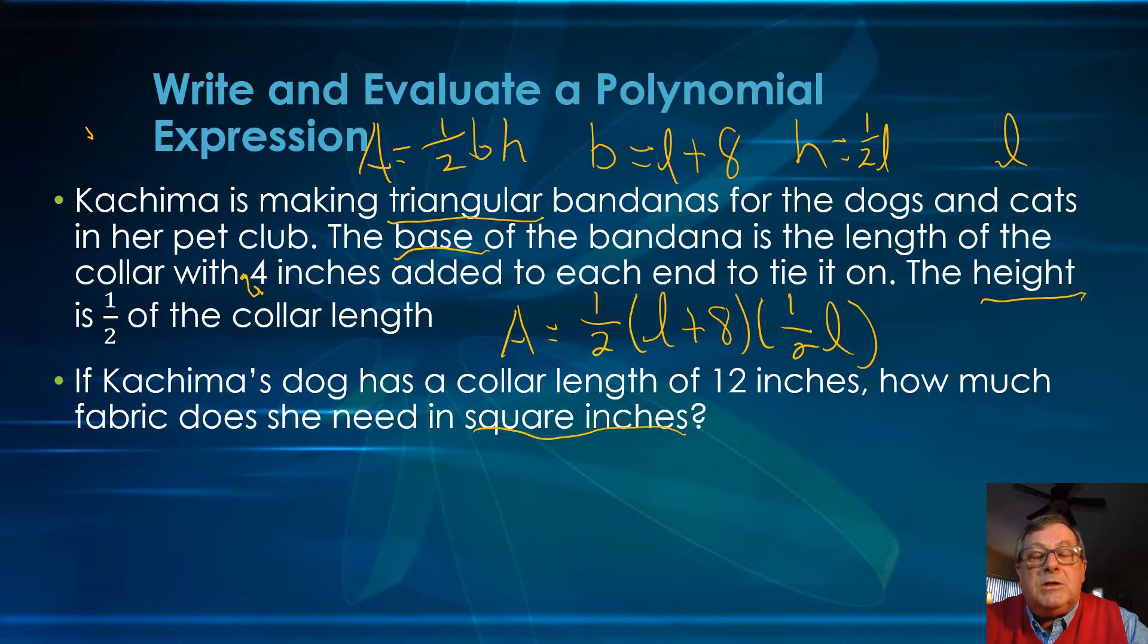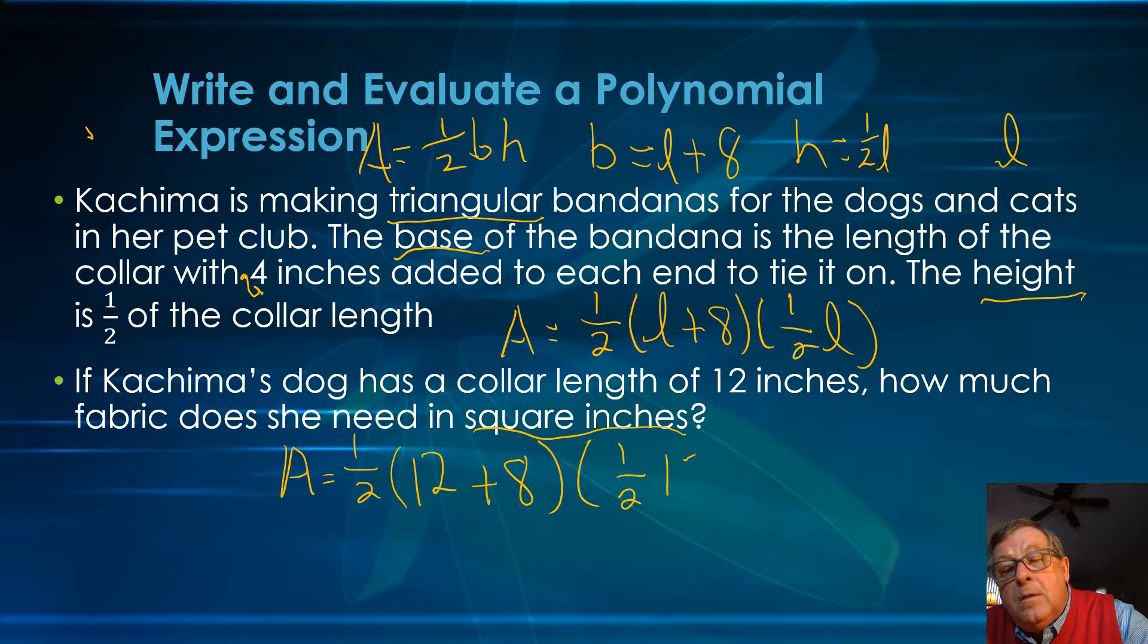Now we're going to evaluate. If Kachima's dog has a collar length of 12 inches, how much fabric does she need? We can substitute 12 in here for L into our expression. Then we would have that the area is equal to one half (12 plus 8), 12 inches for the collar, 8 for the 4 inches on each end to tie it on, times one half times 12, the length of the collar.